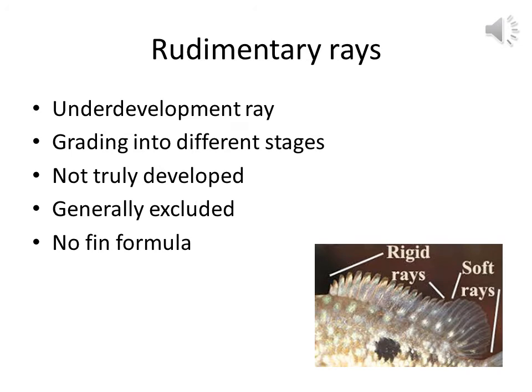The next type is rudimentary rays. The rudimentary rays are underdeveloped rays, grading into different stages. As they are underdeveloped, these rays are not truly developed, and that is why they are generally excluded and have no fin formula.